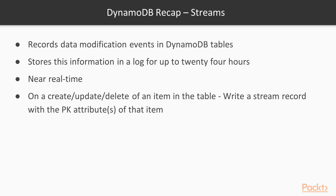DynamoDB Streams record data modification events in DynamoDB tables, storing this information in a log for up to 24 hours. It is near real-time: on the create, update, or delete of an item, DynamoDB Streams writes a stream record with the primary key attributes of that item. You can use streams to trigger additional processing — for example, triggering a Lambda function that sends an SMS or email to your users.